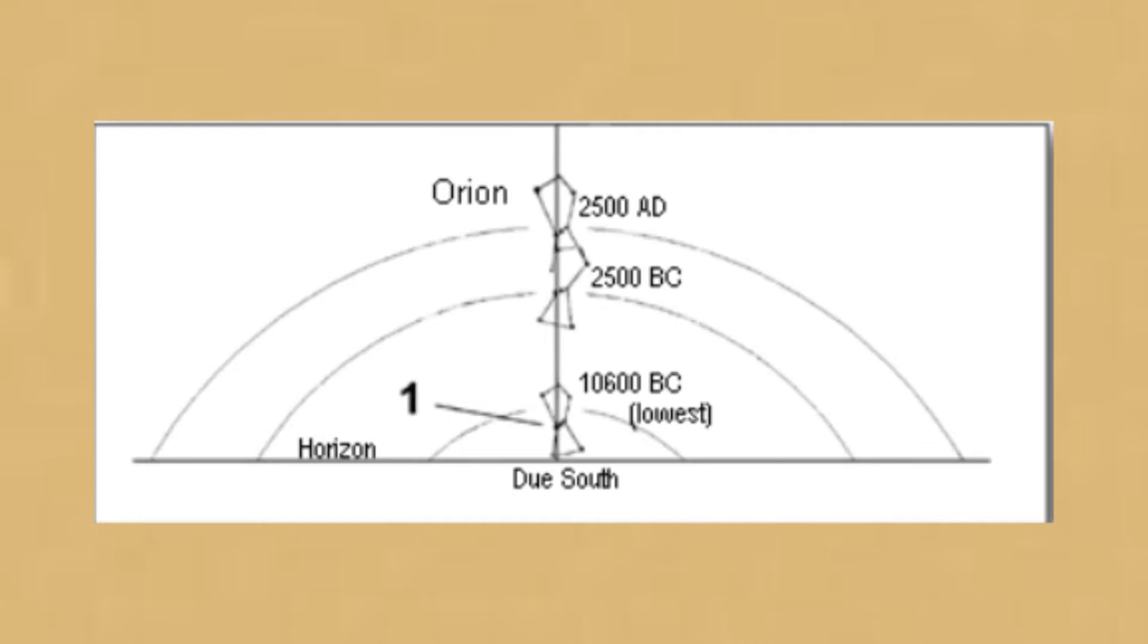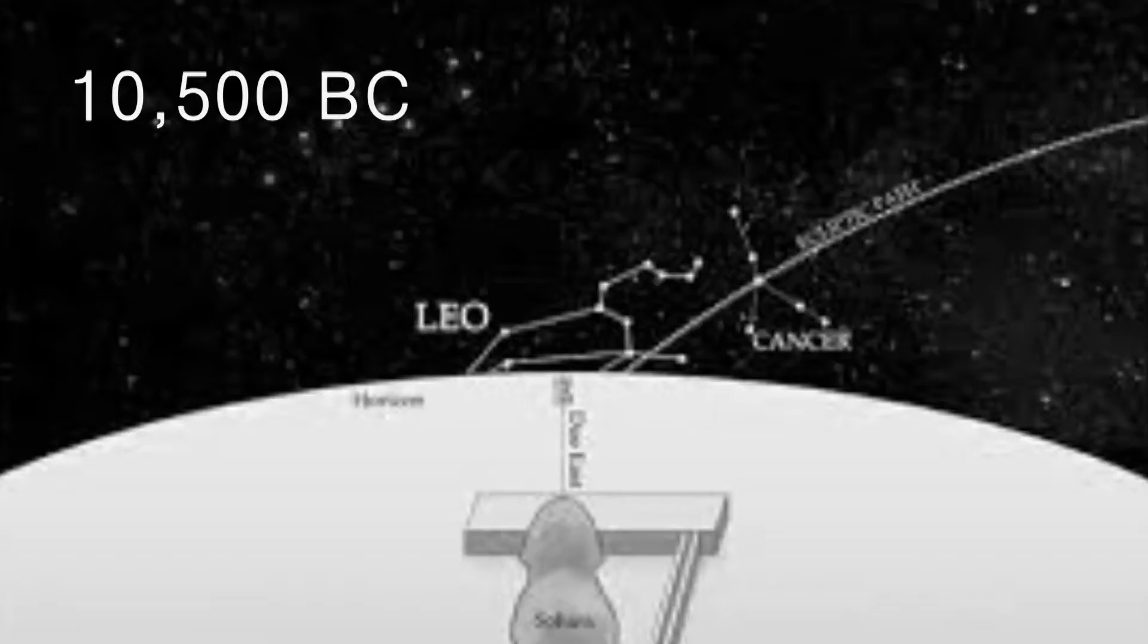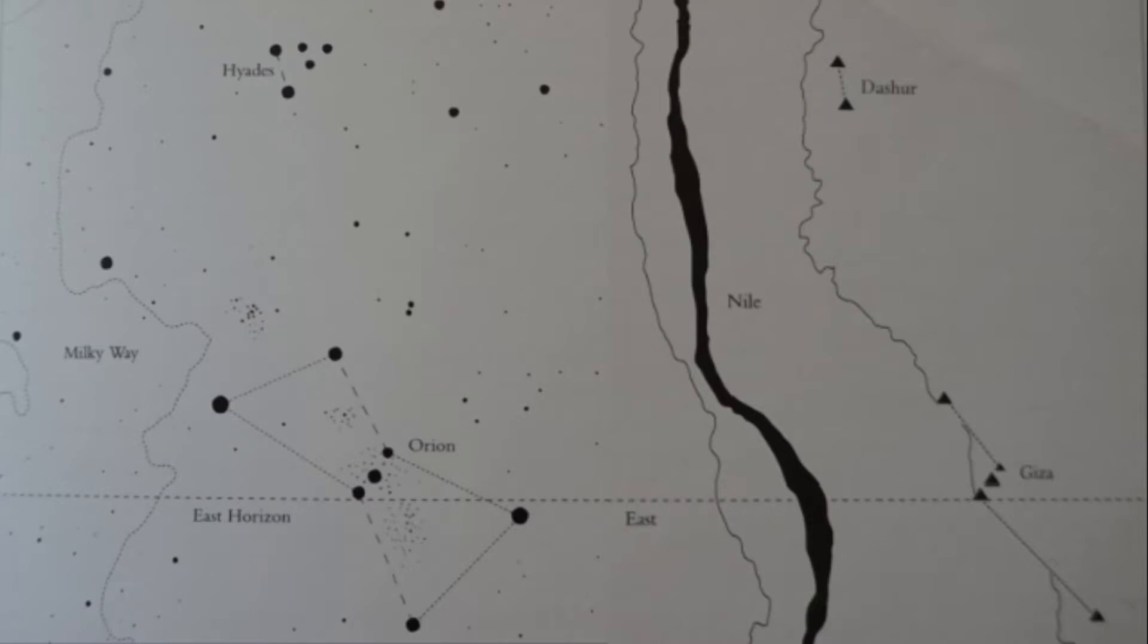However, when the star map of 10,500 BC is transposed to the ground, it is obvious there is a connection. The Sphinx is staring directly east watching the constellation of Leo rise on the spring equinox with the sun following behind it, and Orion's belt is at its lowest point in its transit, exactly mirroring the pyramids with the Nile on the left hand side representing the Milky Way.